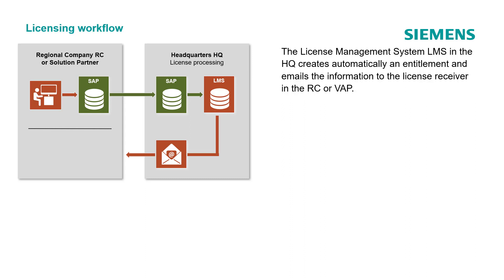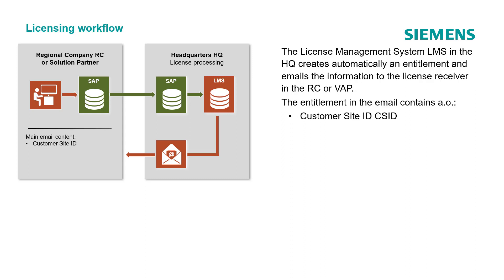The major tasks of a License Management System (LMS) are license generation, license management, license reporting, and product definition. It offers an overview of all products, versions, options, and handling of license updates. The entitlement in the email contains, among others, the Customer Site Identification (CSID).